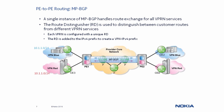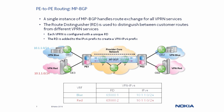MPBGP is used for PE-to-PE routing, and each VPRN service is assigned a different route distinguisher to distinguish it from other VPRN services. This route distinguisher is added to every VPRN IPv4 route before advertising the routes to other PEs. In the example, RD 65000:1 is added to the blue VRF routes and RD 65000:2 is added to the red VRF routes. The resulting combination is a VPN IPv4 address that is never the same for two separate VPRNs, and therefore a single instance of MPBGP handles route exchange for all VPRN services.